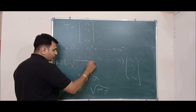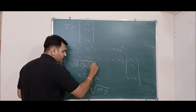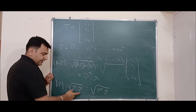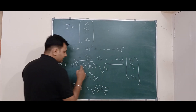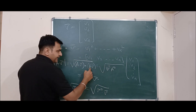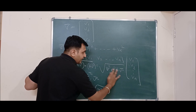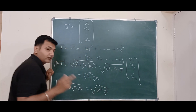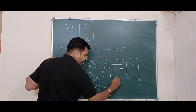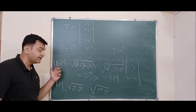Now what can we say about the length of Av̄? It is the square root of (Av̄)·(Av̄). Using the dot product definition, this becomes the square root of v̄ᵀ Aᵀ A v̄. But since A is orthogonal, Aᵀ A equals the identity matrix. So we get the square root of vᵀv, which is just the length of v. Therefore the length of a vector v equals the length of Av — length is preserved.